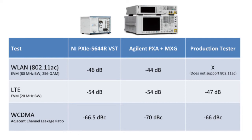We also looked at comparing it to a production test system. These production testers typically can only test wireless connectivity or cellular measurements. This one in particular could not test WLAN, which is why there's an X in that column. In addition, we looked at test times. The PXIE5644R VST was anywhere between 5 and 10 times faster than the Agilent PXA and MXG, and was still faster than the production tester designed only to test cellular measurements.